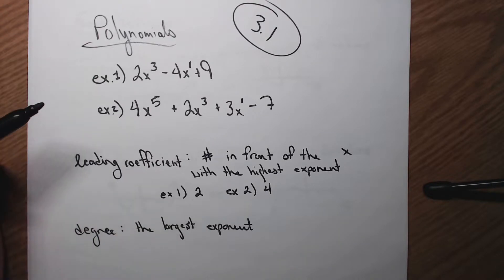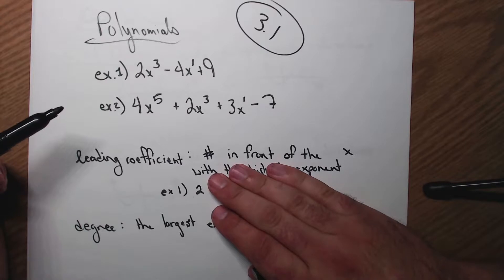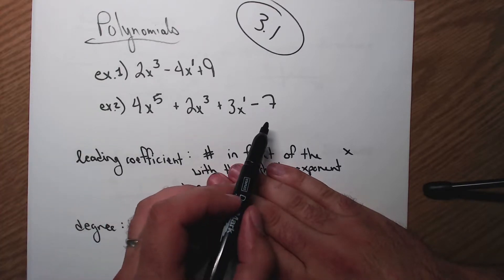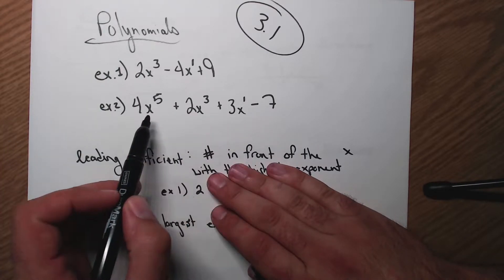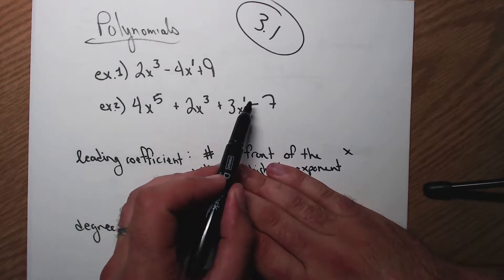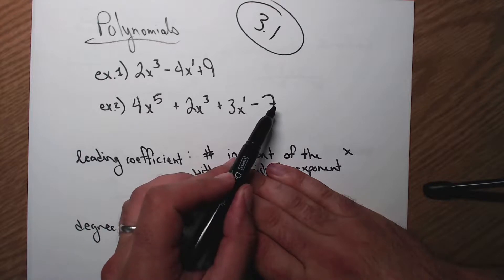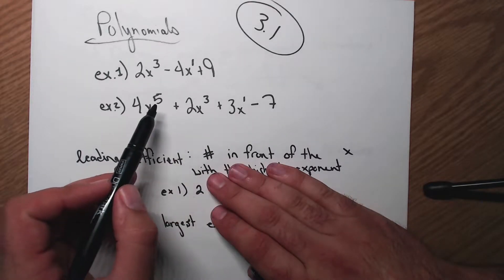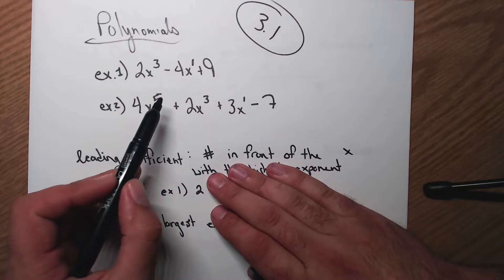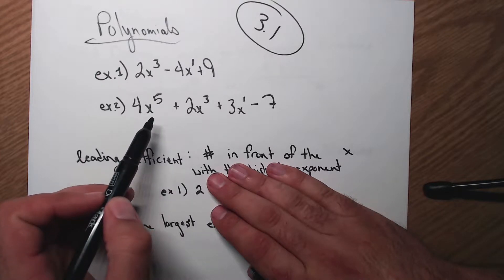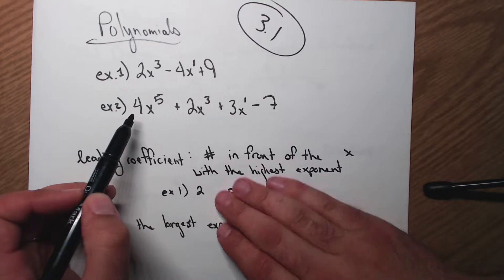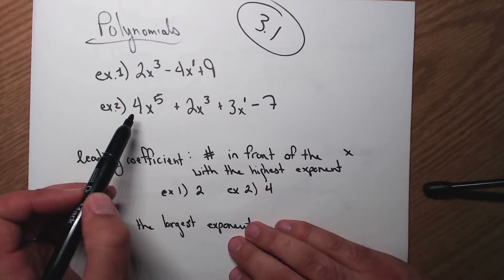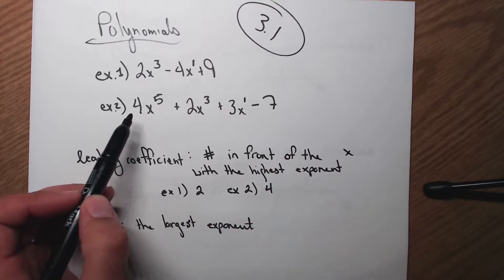For example 2, I need to find the highest degree x or the highest exponent. I have x to the 0 power, 3rd, and 5th — they just happen to be odd numbers here, though it doesn't always happen like that. So it's x to the 5th, that's my highest exponent, and I pick the number out in front: 4. So for example 2, the leading coefficient is 4.